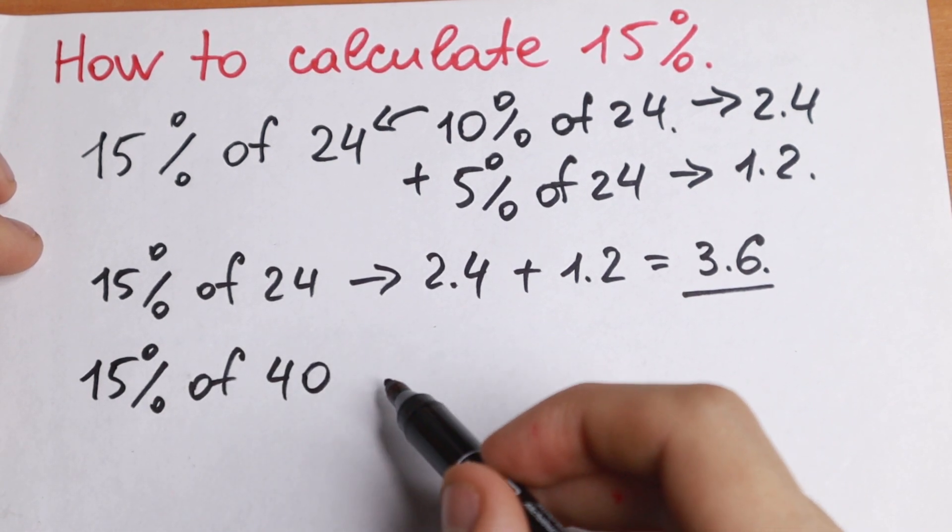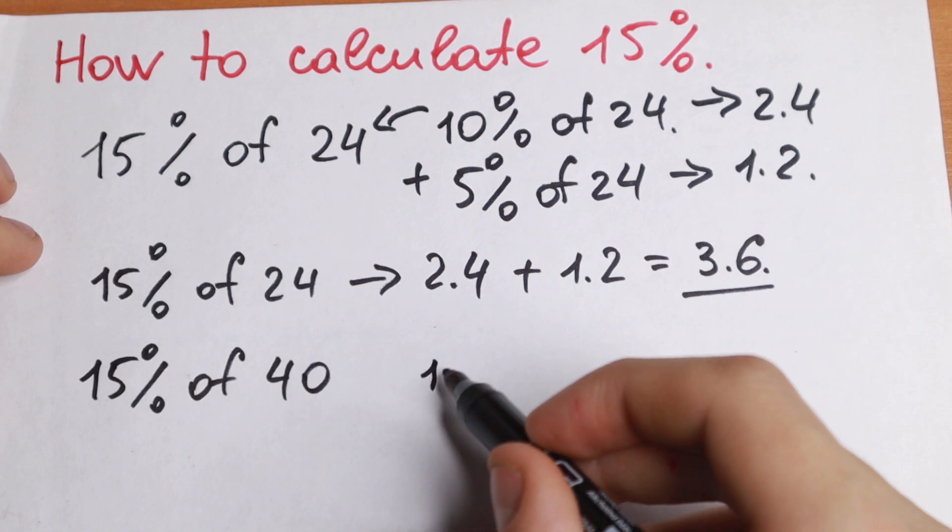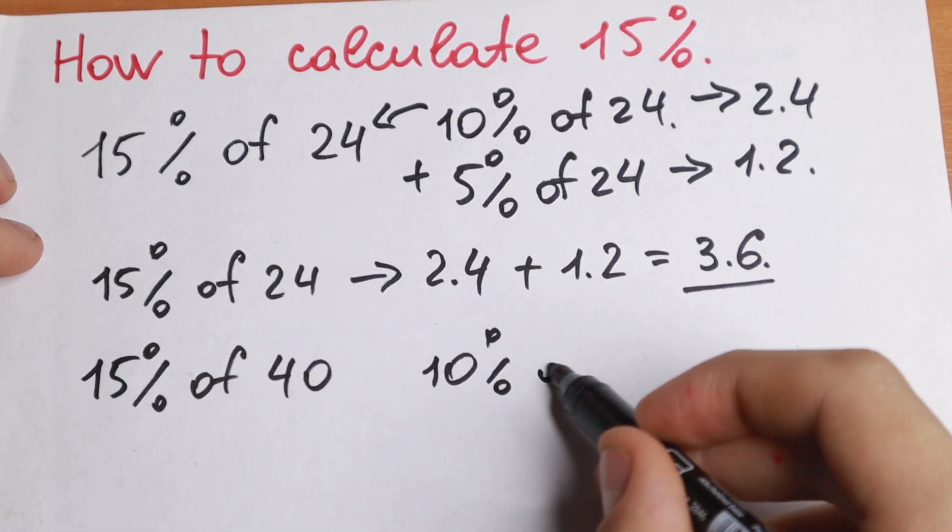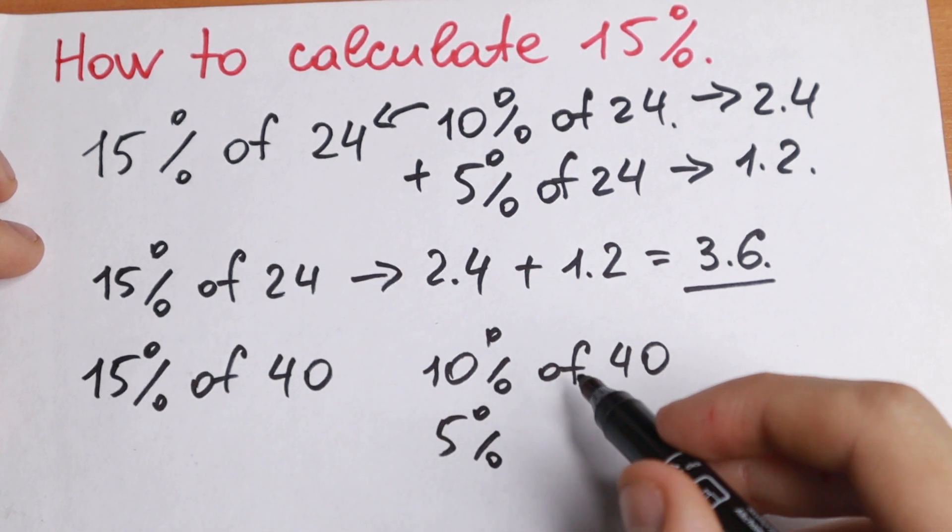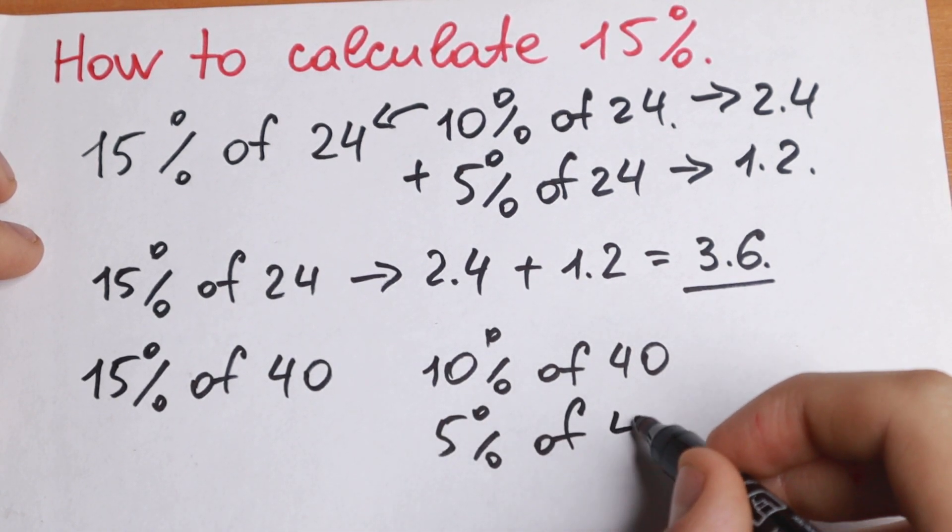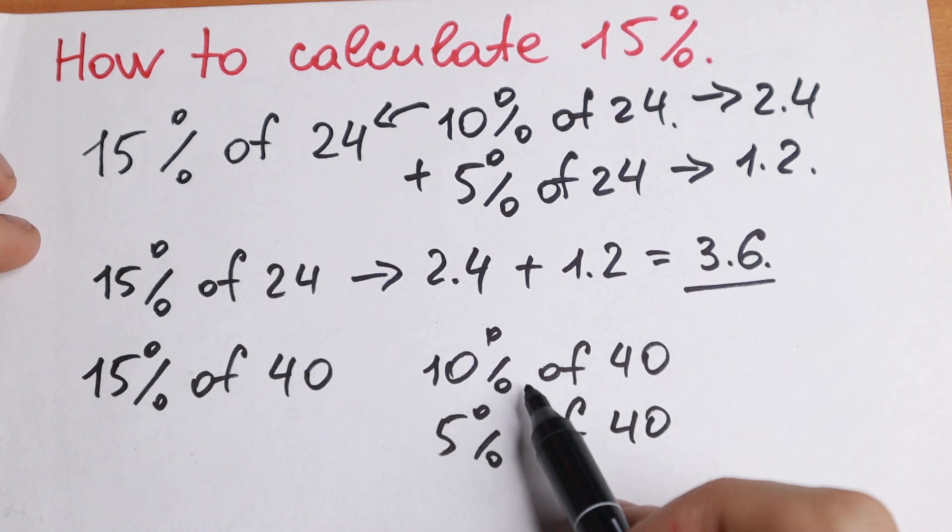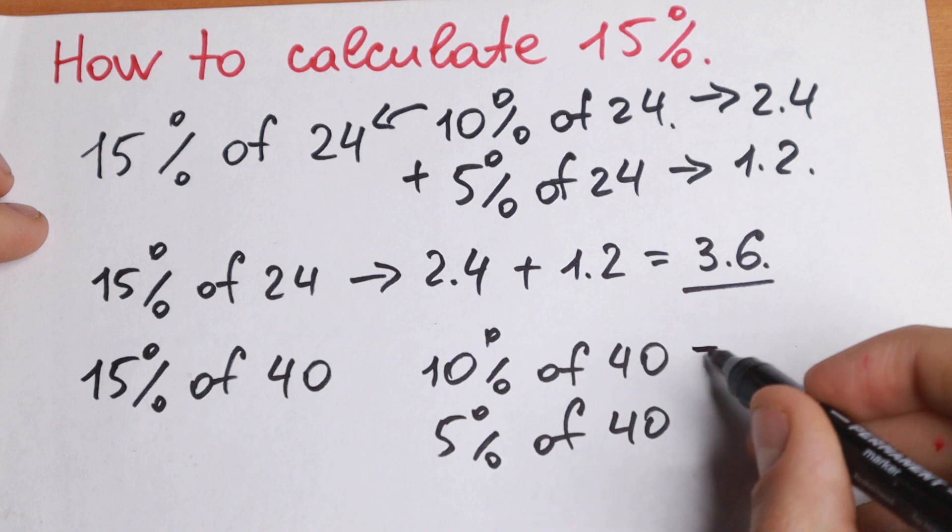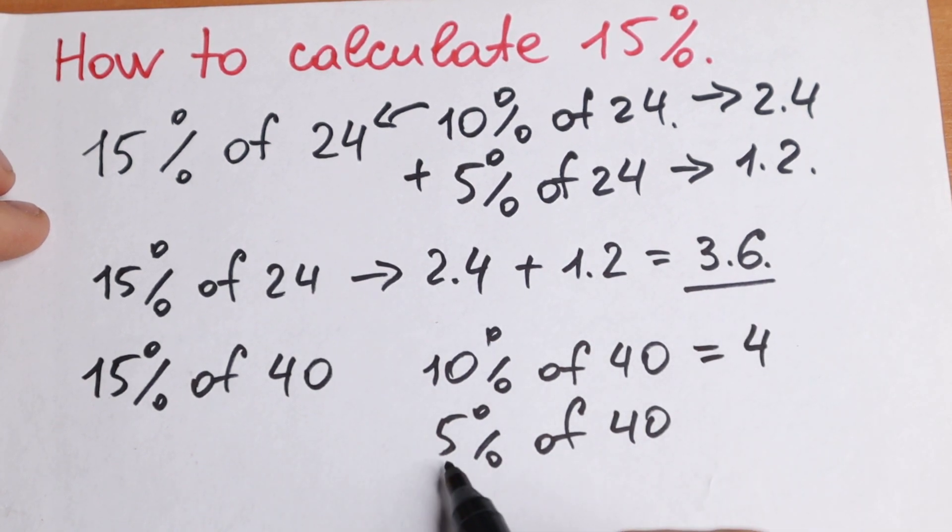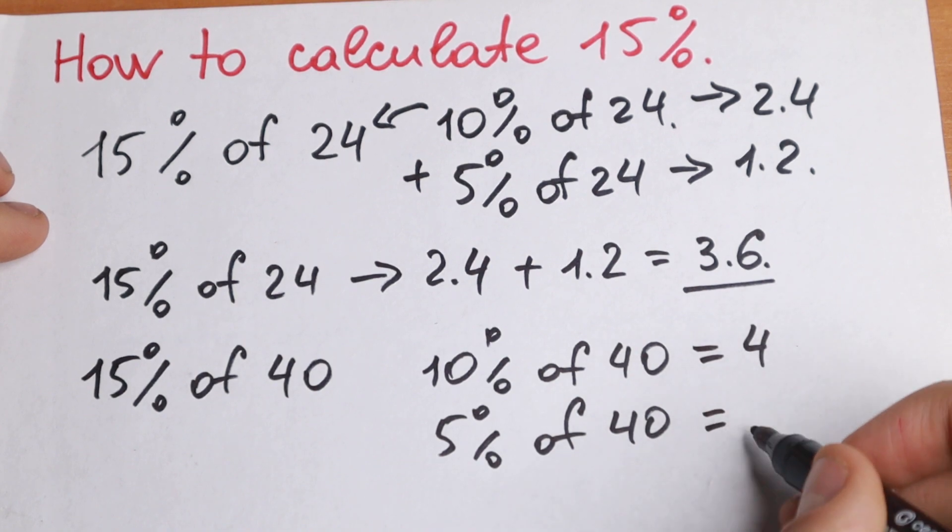So at first we need to find 10% of this 40, 10% of 40 and 5% of 40. So we need just to find these two cases of 40. So 10% of this 40, we just divide this number by 10. We will have that this will be equal to 4. And 5% is half of this 10%. So as you can see, we just divide this by 2, we will have 2.